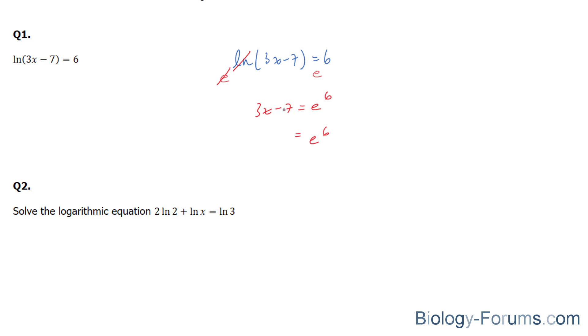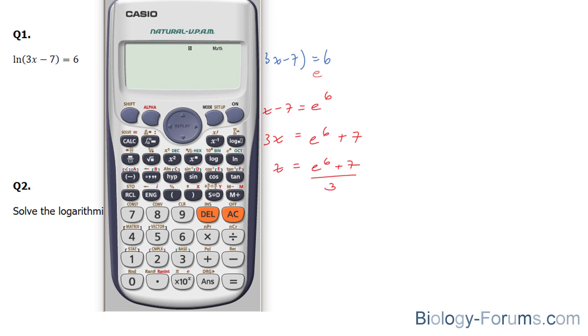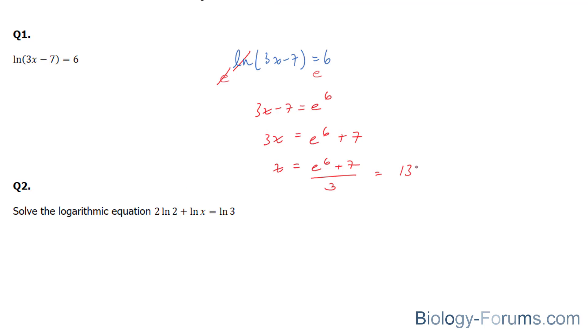e to the power of 6, bring this negative 7 over, make it positive, is equal to 3x. And therefore, x is equal to (e^6 + 7) / 3. Now let's find out what that number is using our calculator. e to the power of 6 plus 7 divided by 3 is equal to 136.80. Wonderful.